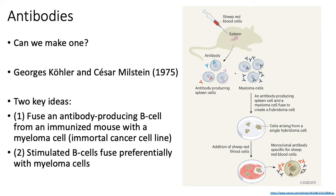One of their key ideas was that if you took a B-cell from an immunized mouse and fused it with an immortalized cancer cell line — more specifically a myeloma cell, which is a cancer cell line derived from a plasma B-cell — then you could produce what's called a hybridoma cell, which is an effectively indefinitely multiplying antibody-producing B-cell that could produce the antibody originally generated from the B-cell that was fused with the myeloma cell.